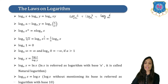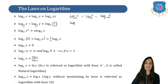Similarly, log x minus log y — of course everywhere the base is a — can be written as log x upon y to the base a. That is, log 2 to the base a minus log 3 to the base a can be written as log 2 by 3 to the base a.